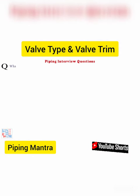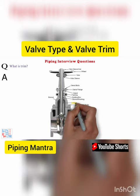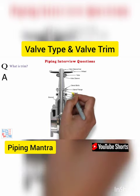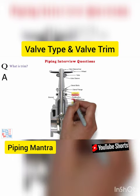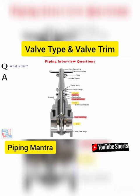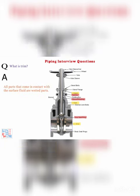What is trim? Trim is composed of stem, disc, gland, bonnet bushing, seat ring, and other small internal parts that normally contact the surface fluid. All parts that come in contact with the surface fluid are wetted.